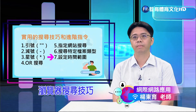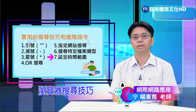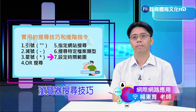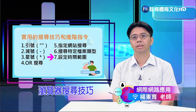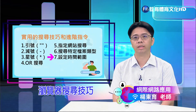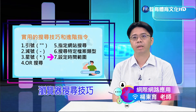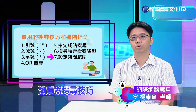第七个技巧是设定时间范围。选择特定的时间范围可以限制搜寻结果，仅显示在某个特定时间内发布或更新的讯息。这对于寻找最新的新闻报导、学术研究文章特别有用。例如搜寻「能源 2024」，会出现2024年相关能源议题，让您可以更精确找到最近的事件或最新的研究结果。